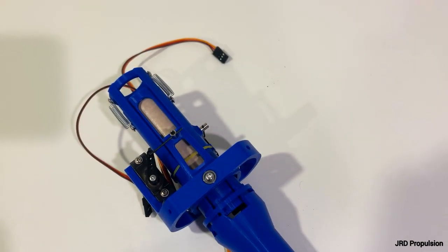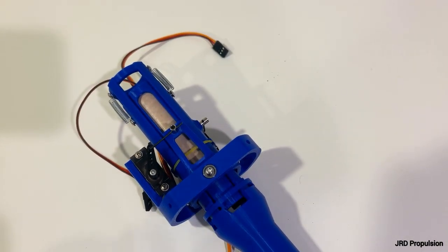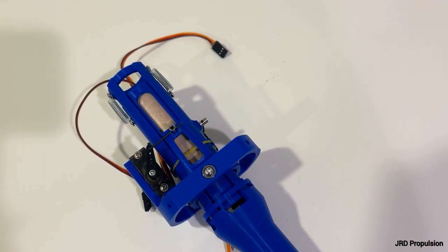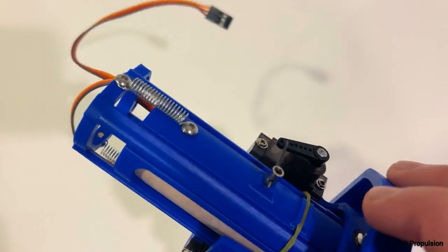The thrust vectoring mount that I use looks like this and has two servos to control each axis of the mount. Both the ascent and descent motors are stacked on top of each other, and there are two springs attached which help to eject the ascent motor once it's done burning.